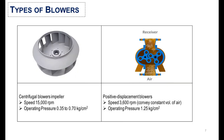The types of blowers are centrifugal blowers and positive displacement blowers. Centrifugal blowers run at relatively high speeds up to 15,000 RPM and create an operating pressure from 0.35 to 0.7 kg. Positive displacement blowers run at a speed of 3,600 RPM with an operating pressure of 1.25 kg.